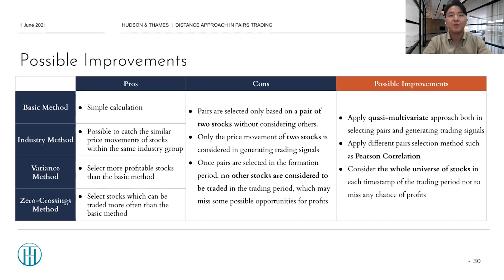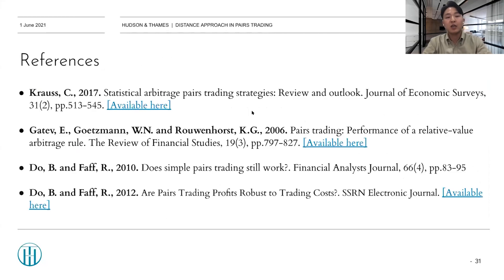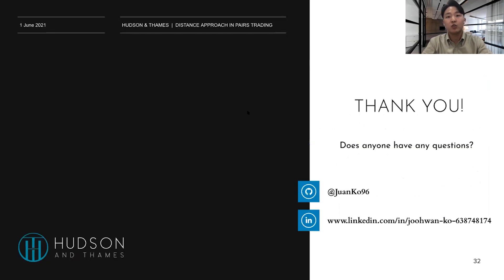So please stay for part two. We can apply a co-multivariate approach both in selecting pairs and generating trading signals. We may also apply different pair selection methods such as Pearson correlation, and considering the whole universe of stocks at each time stamp of the trading period — rather than just the selected pairs — will help as well. This is the end of my presentation, and here are the references for the slides. Before we move on to the next session, we'll have a quick five to ten minutes of Q&A. Please feel free to ask. Thank you for listening.